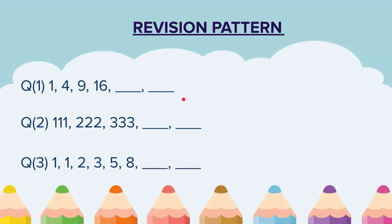Second one. The first number is 111, the second number is 222, the third number is 333. Write the next two terms.